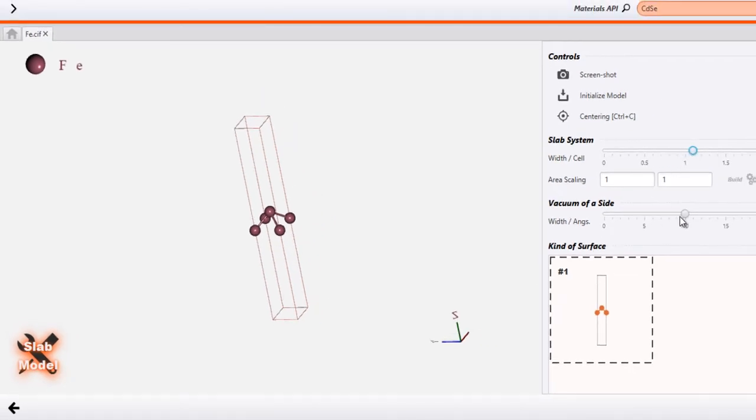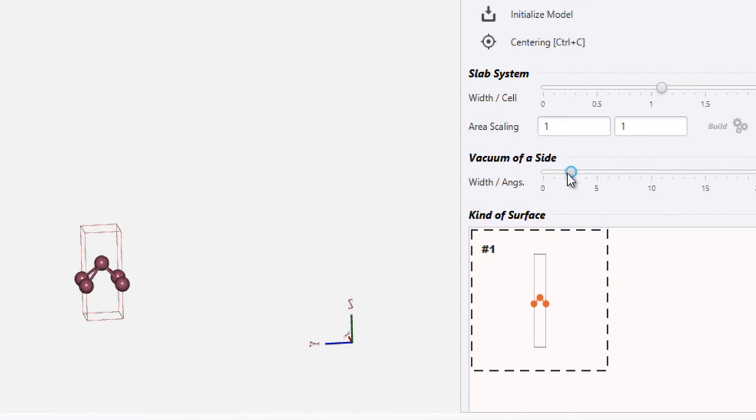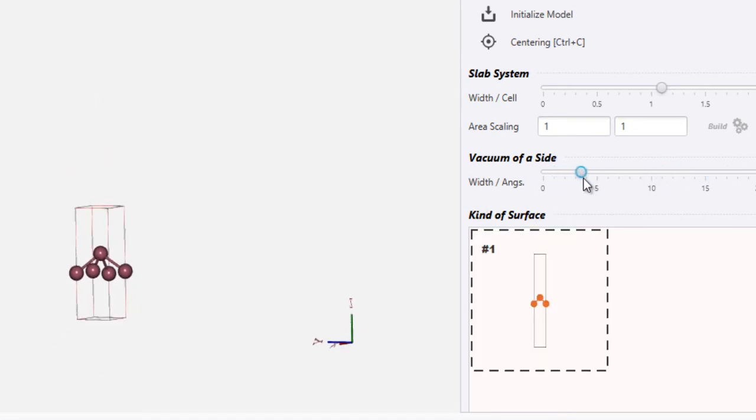However, that's how you create a monolayer. And then what you can do is, what you are seeing is you are seeing a lot of vacuum in your cell. So you can specify how much vacuum you want in your unit cell by sliding this slider here. So that's how you create a monolayer kind of a structure.